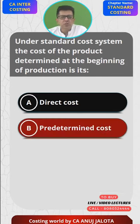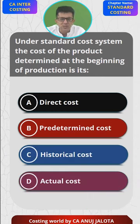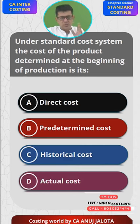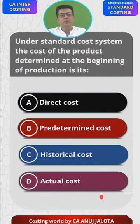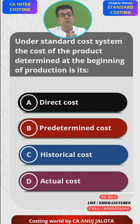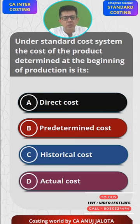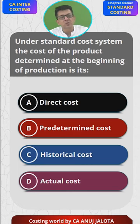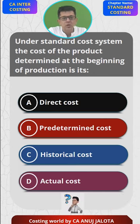Option (b) is a predetermined cost. Option (c) is a historical cost, and (d) is actual cost. In a standard costing system, before the production period starts, you establish what the cost should be. These are called standard costs, also known as predetermined costs — meaning what the cost should be. So option (b) should be the correct answer.